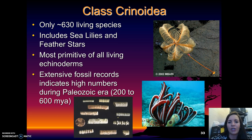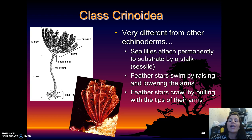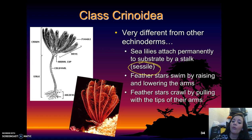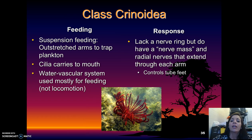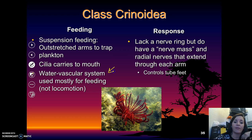The final class is Crinoidea — sea lilies and feather stars. There are only about 630 living species. They are the most primitive of all living echinoderms, with an extensive fossil record indicating high numbers during the Paleozoic era, roughly 200 to 600 million years ago. They are very different from other echinoderms because they attach permanently by a stalk, making them sessile. They can swim by raising and lowering their arms and can crawl, but are mostly attached. They are suspension feeders, using outstretched arms to trap plankton. Cilia carry food to the mouth, and their water vascular system is used mostly for feeding, not locomotion.